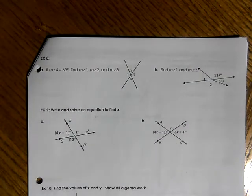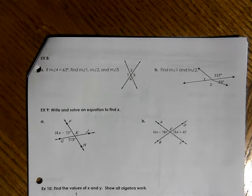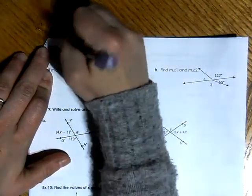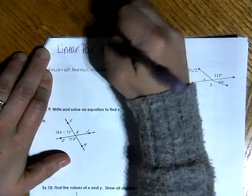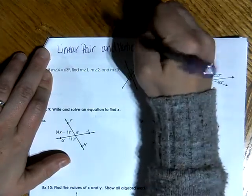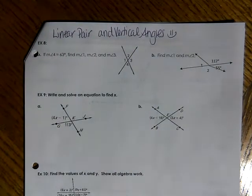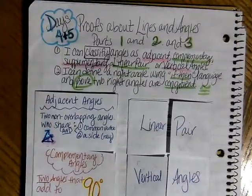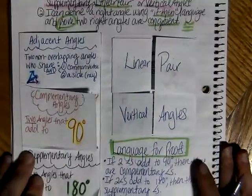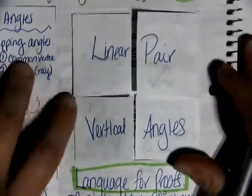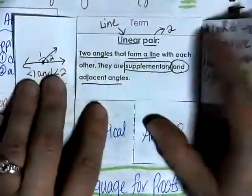Hi everyone. For today's lesson we are going to continue with our discussion on proofs about lines and angles, part 2. In this lesson we are going to be discussing the vocabulary words of linear pair and vertical angles. Before you get started with this video lesson, please make sure that you have watched the proofs about lines and angles vocab video lesson and have all of our cutouts ready to go. Our focus for today are on two vocabulary words: linear pair and vertical angles. So let's go ahead and re-explore what those terms mean.